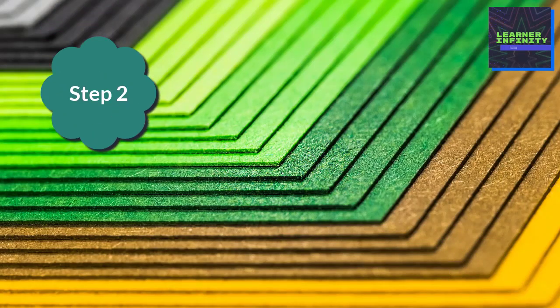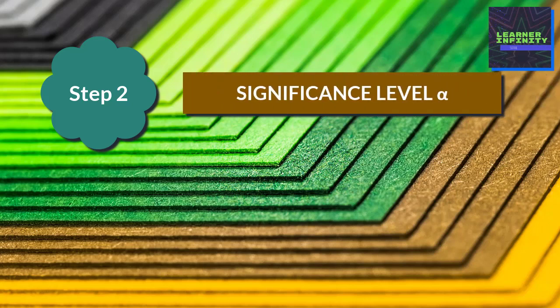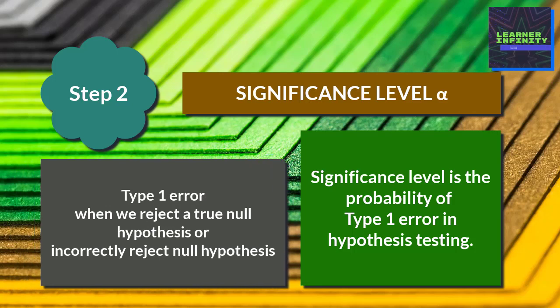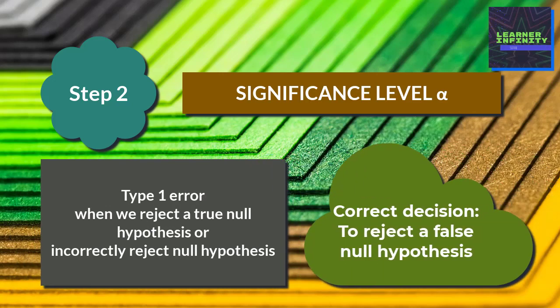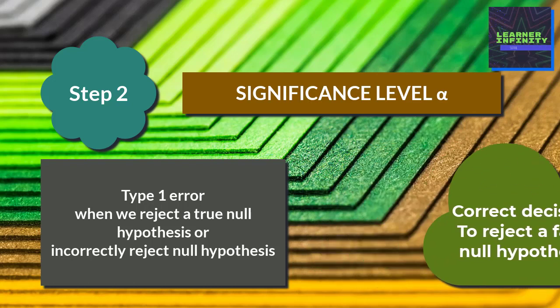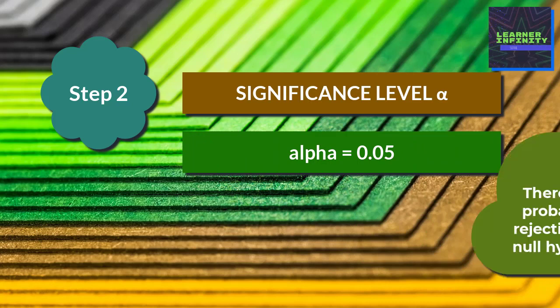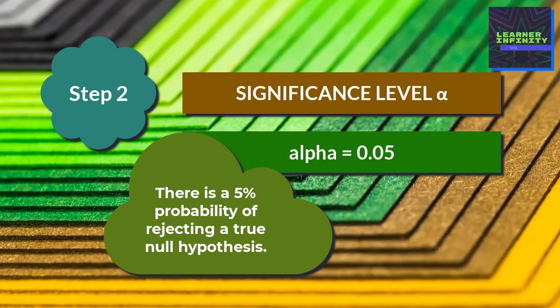The second step is specifying the significance level, denoted by the symbol alpha. Significance level is the probability of a Type 1 error in hypothesis testing. Type 1 error is when we reject a true null hypothesis — the correct decision is to reject a false null hypothesis. In our example, we will use a significance level of 0.05, meaning there is a 5% probability of rejecting a true null hypothesis.